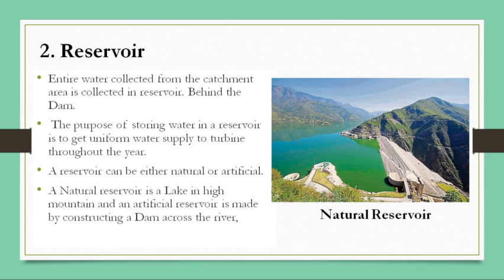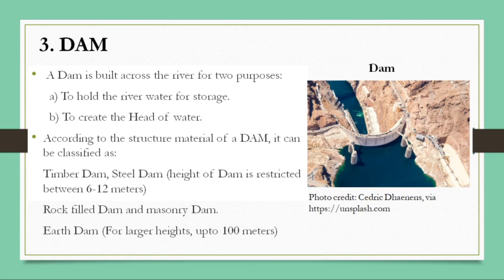The third component is a dam. The dam is built across the river for two purposes: first, to hold the water of the river for storage; second, to create the head of water. According to the structure material, a dam can be classified as timber dam or steel dam — these are restricted to a height between 6 to 12 meters. Other categories are rock-fill dams and masonry dams. Earthen dams are constructed for larger heights up to 100 meters.